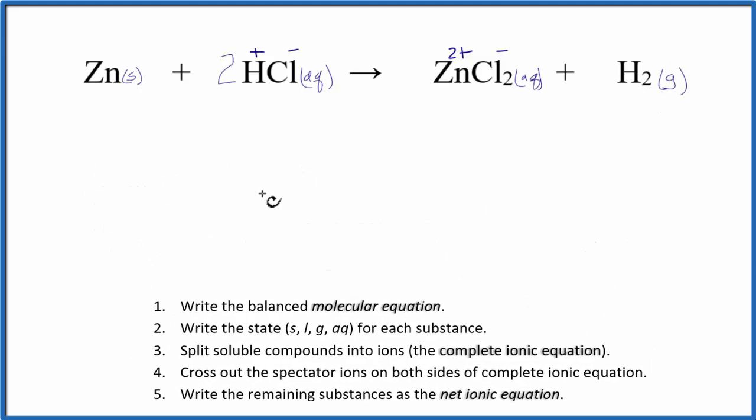Now we can write the complete ionic equation. We have zinc, and I won't write the state after each one right now. We have H plus—this breaks apart into H plus—and then Cl minus, that's the chloride ion.